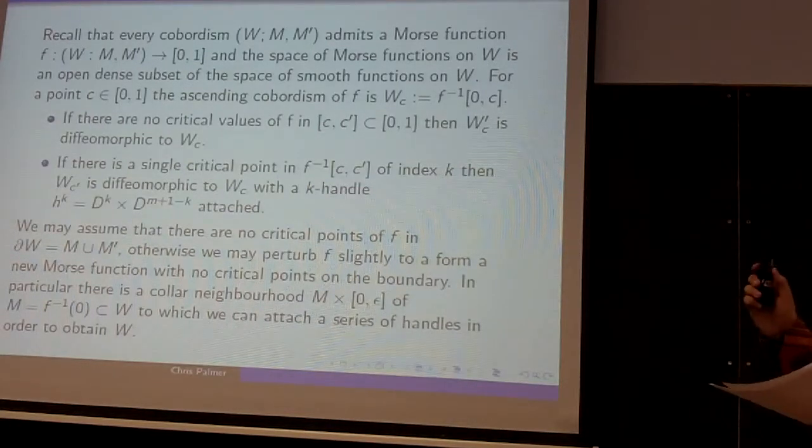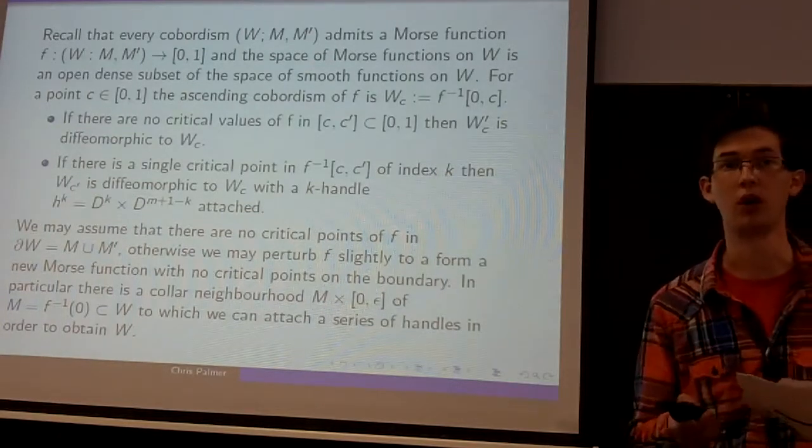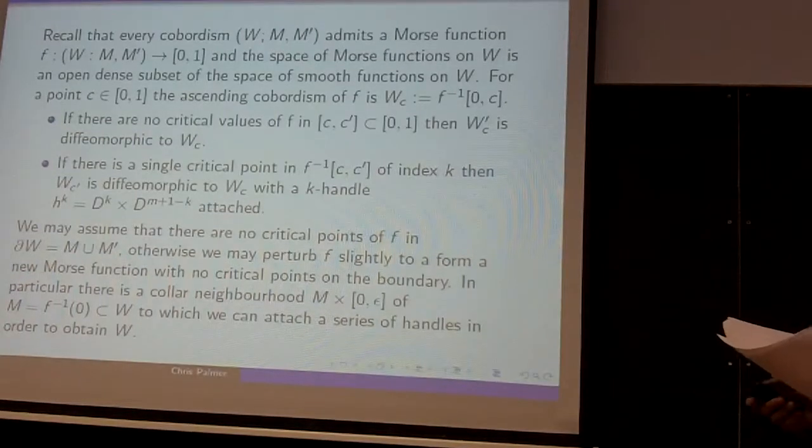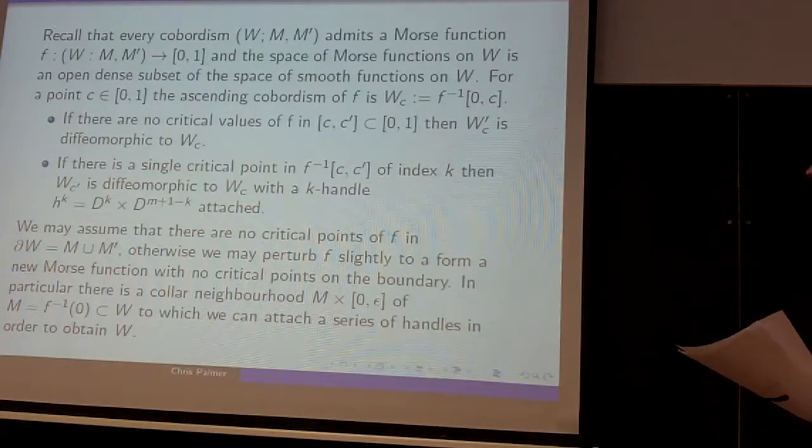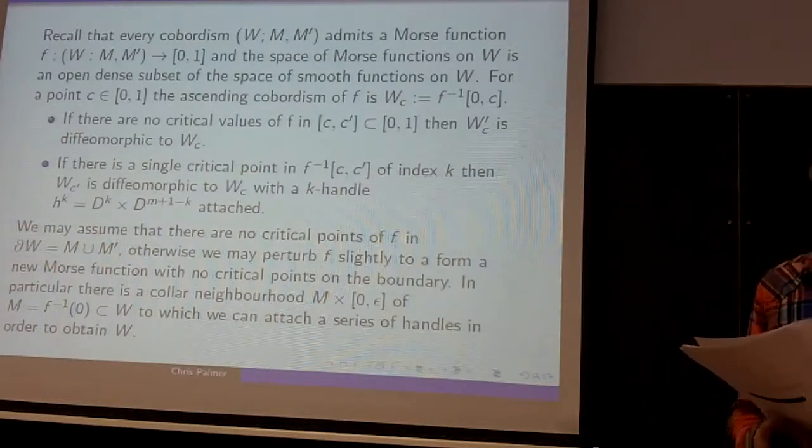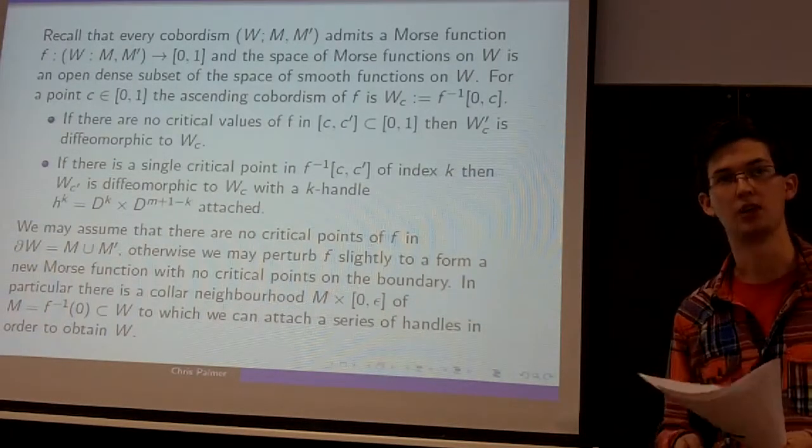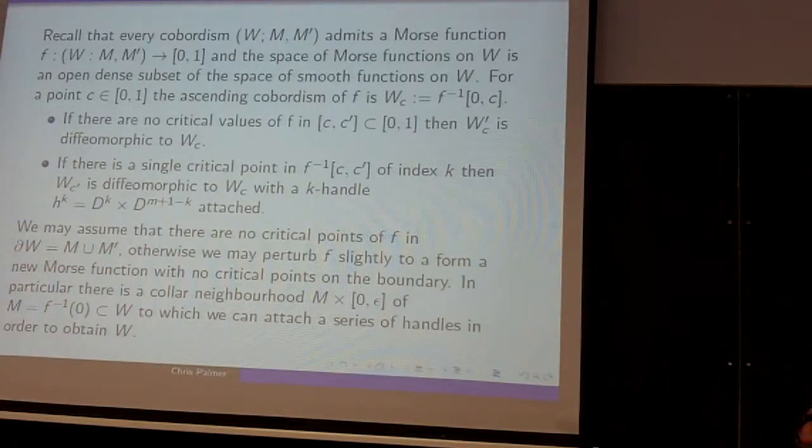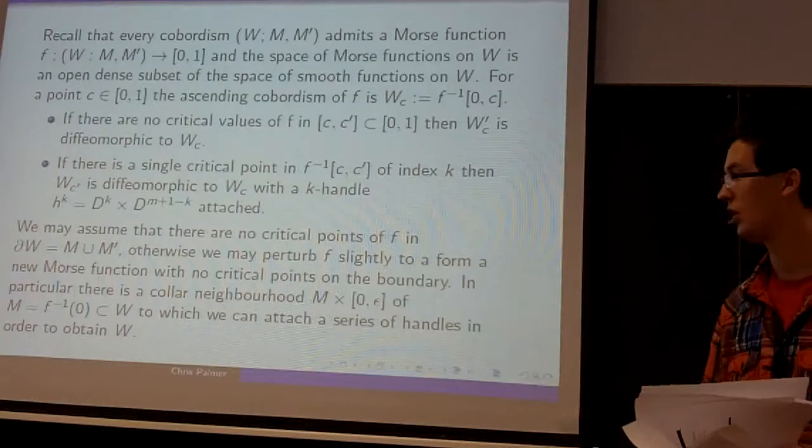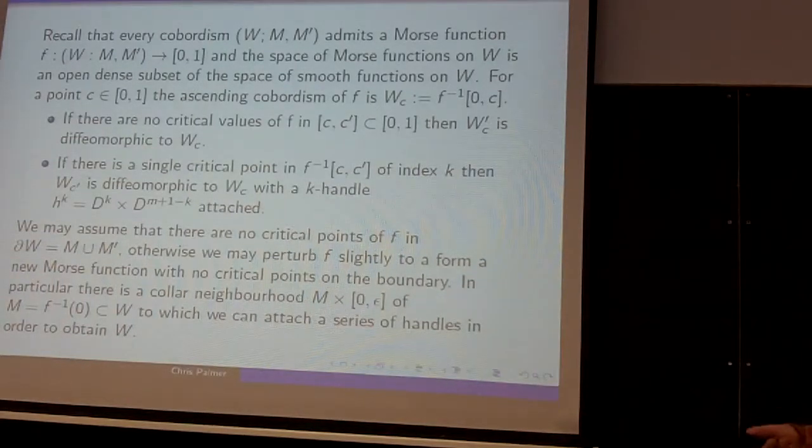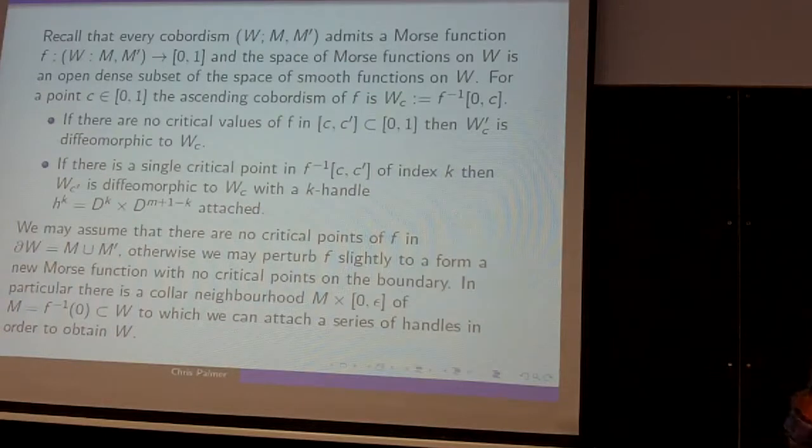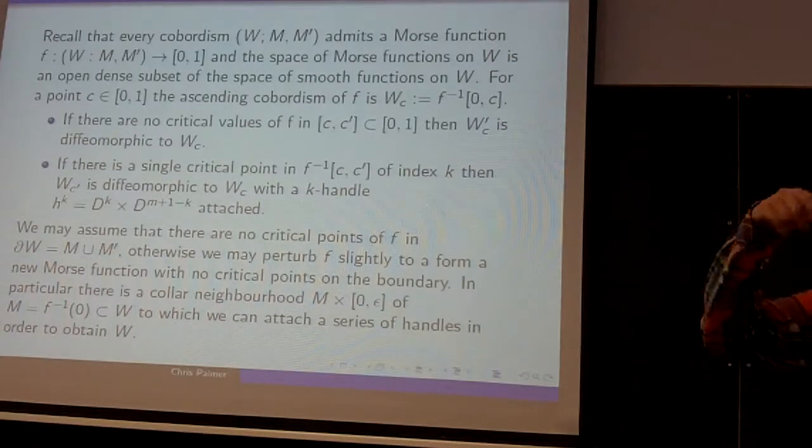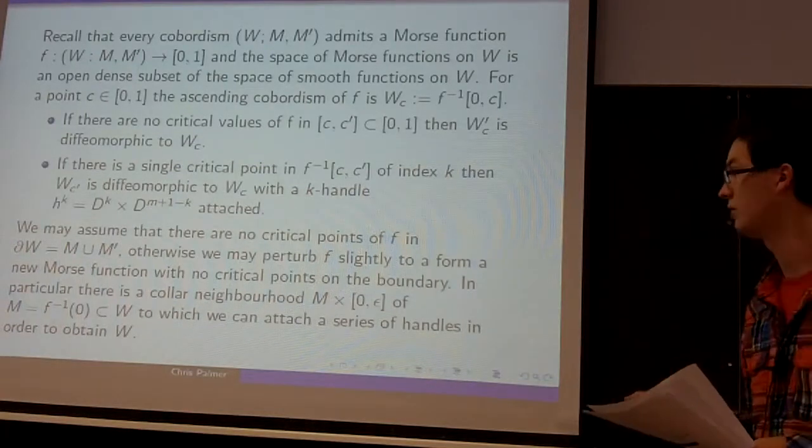So in fact, you can slightly improve this. You can always assume that 0 and 1 are regular values of F. Otherwise, using some genericity or density arguments, you can perturb F to a new Morse function which has no critical points on the boundary of W, so M and M'. This means in particular that we can find a so-called collar neighborhood of M inside of W. A collar neighborhood is essentially a neighborhood diffeomorphic to M × [0, ε], which has no critical points in. So then the idea is that you can use your Morse function to successively attach handles to this base Cartesian product going through all the critical points in order to eventually arrive at W.